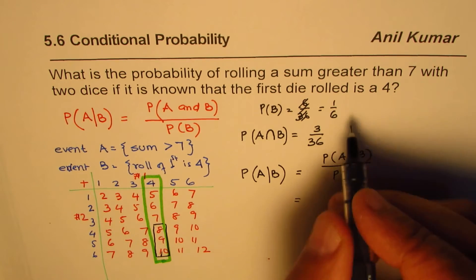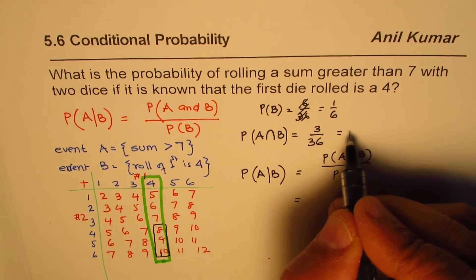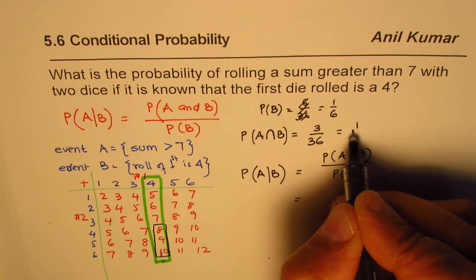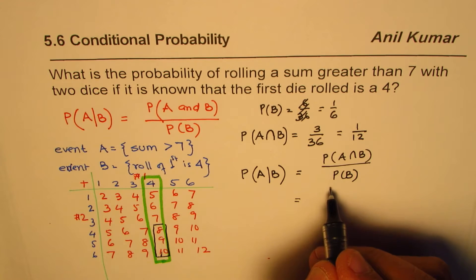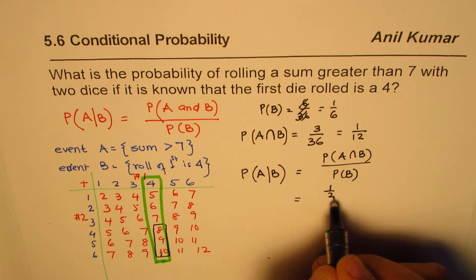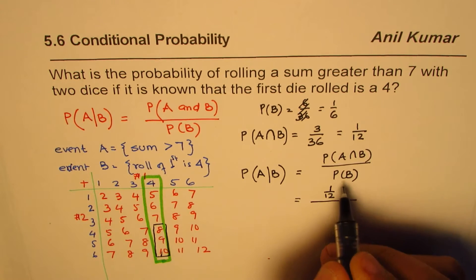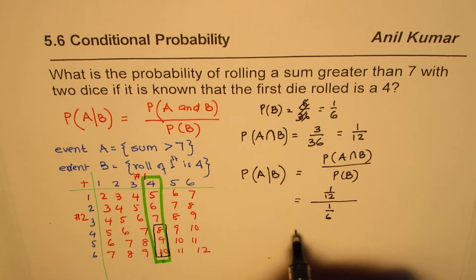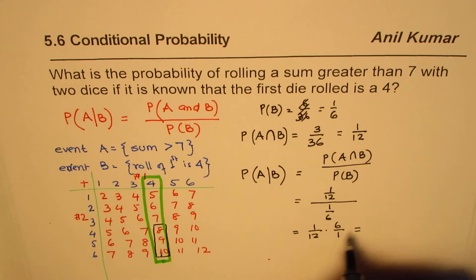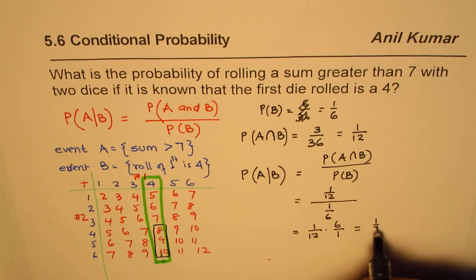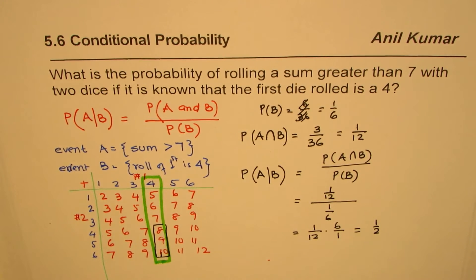It is 3 over 36, which could be simplified as 1 over 12. Dividing by 3, 1 over 12. So we will write this as 1 over 12 divided by B, which is 1 over 6. And that is equals to 1 over 12 times 6 over 1. Or you can say, simplified, is 50%.